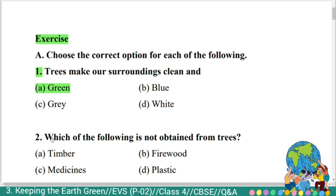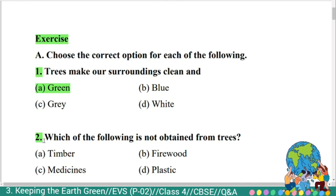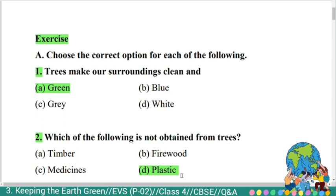Second question: 'Which of the following is not obtained from trees? Option A: Timber. B: Firewood. C: Medicines. D: Plastic.' The correct answer is plastic. Plastic is not obtained from trees.